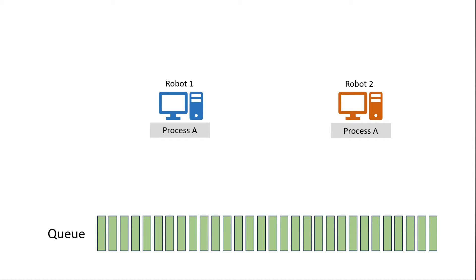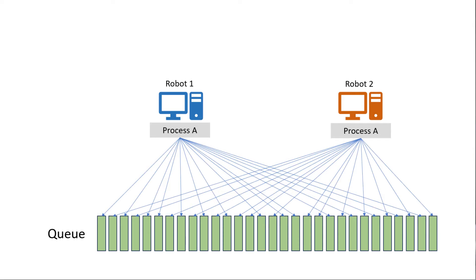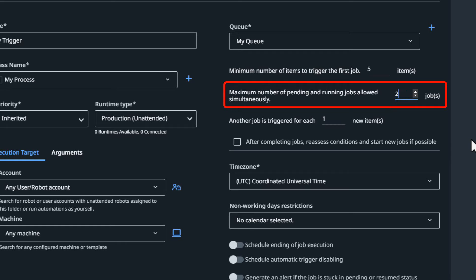So what if we had another robot machine? Now we have robot one and robot two, both can run process A, and both have queue triggers configured to run when something is added to our queue. What's going to happen is each of them is going to process items in parallel. The queue items were processed a lot faster because now you have two robots doing the work of what used to be one robot — so it'll be done in about 45 minutes instead of 90.